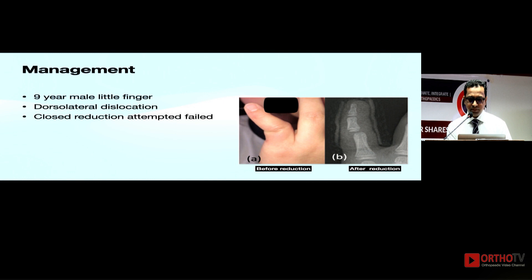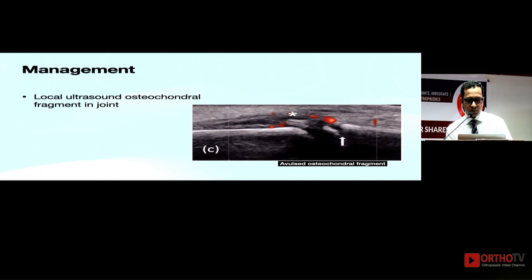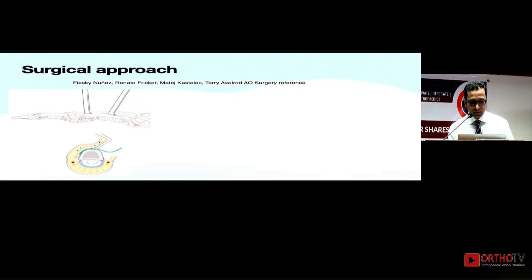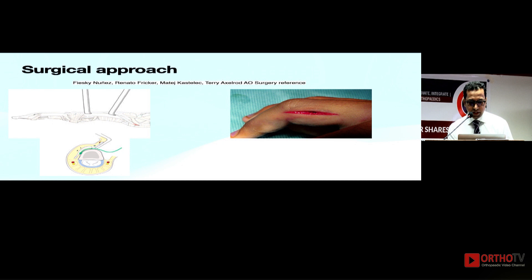Coming to the first case: close reduction was attempted and could not be reduced. The treating surgeon did an ultrasound and found an avulsion fragment entrapped between the joint, through which it was not possible to reduce it congruently. The approach is mid-axial, dorsal-radial, or dorsal depending on the site. If you mark those points at the joint you can take a straight mid-axial incision and approach the joint. Lift the lateral band — this is very useful for treating other phalanx fractures as well. You can put either micro-anchors or available anchors to fix the avulsed ligament.